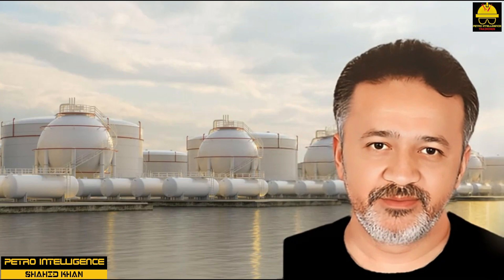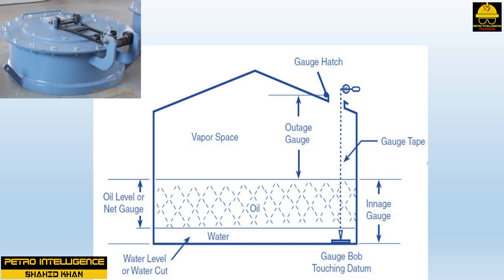Gauge hatches are provided in the roofs of atmospheric tanks to enable the contents to be measured. A secondary function of a gauge hatch is to provide some emergency pressure relief. Except when in use, gauge hatches should be kept closed to prevent loss of vapors, fire hazards, and entry of rainwater. Hatches should not be weighted or otherwise restricted from opening, as restricting them eliminates their function as a pressure relief device. The datum plate directly below the open hatch is used as a reference point when a technician is measuring liquid level with a gauge line.